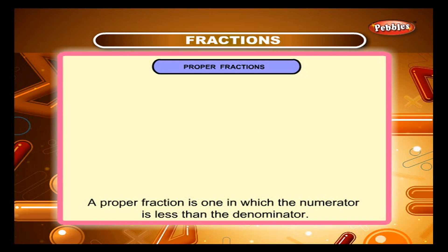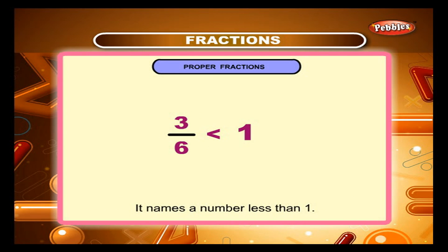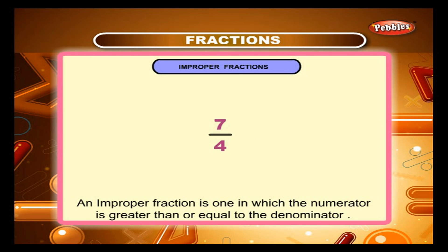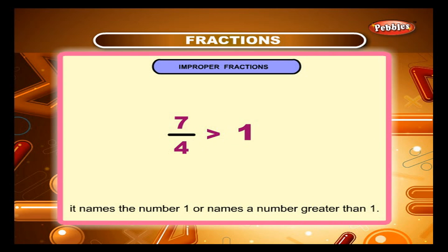A proper fraction is one in which the numerator is less than the denominator; it names a number less than 1. An improper fraction is one in which the numerator is greater than or equal to the denominator; it names the number 1 or a number greater than 1.